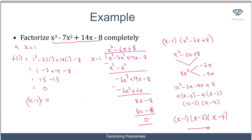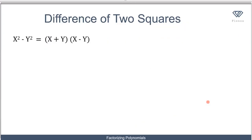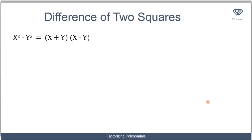Replacing the quadratic factor, the complete factorization of x cubed minus 7x squared plus 14x minus 8 is (x minus 1)(x minus 2)(x minus 4). The roots — or zeros — of the polynomial are 1, 2, and 4.